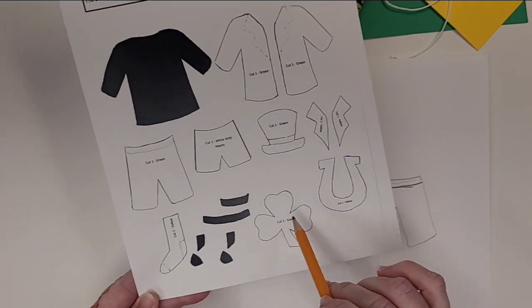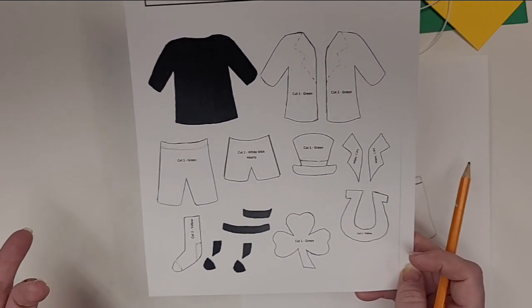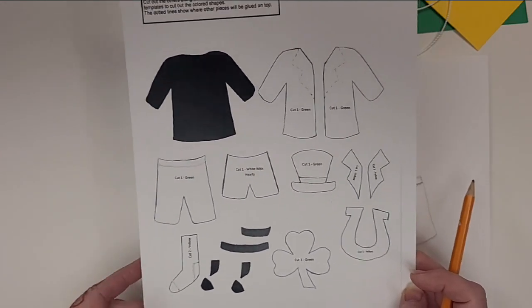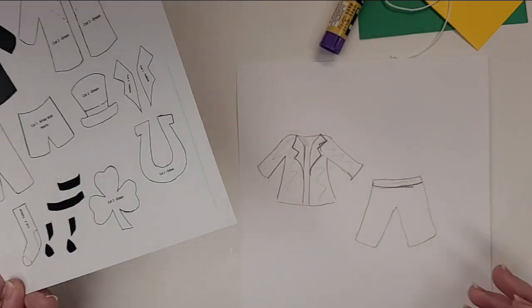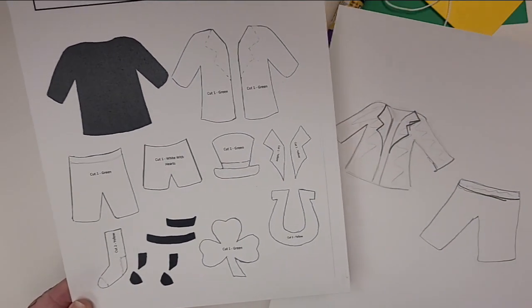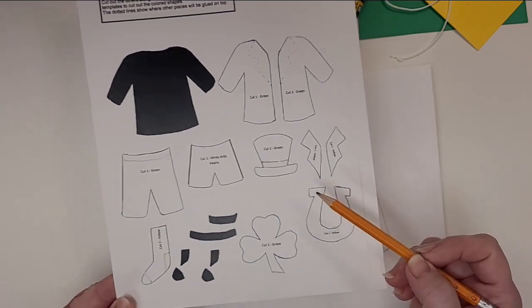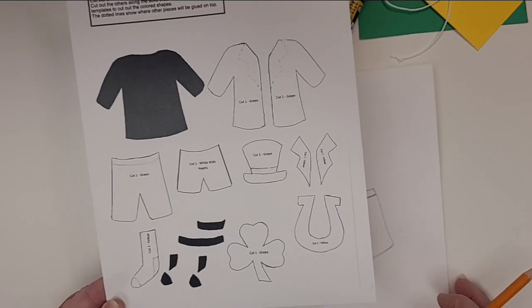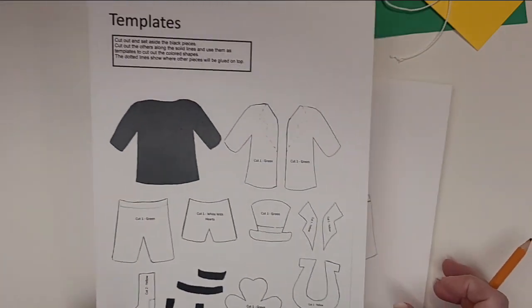And if you can't draw a shamrock like this you can certainly find a picture on the internet where you can trace around it. Just look for shamrock clip art and that will get you where you need to go. And the same thing for here. If you can't do this shape the horseshoe just look for horseshoe clip art. Print one out and trace it. So that's how you can get these if you don't have the template.